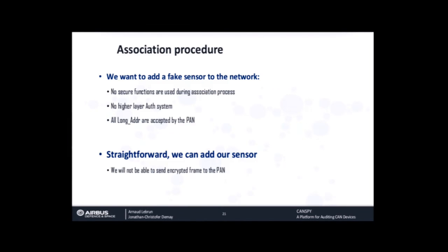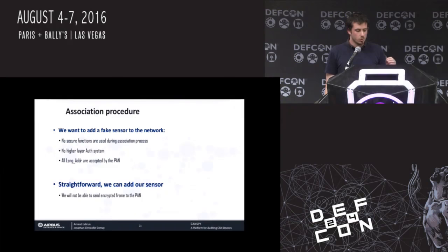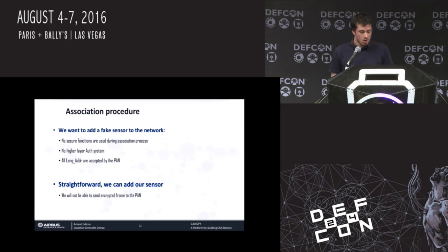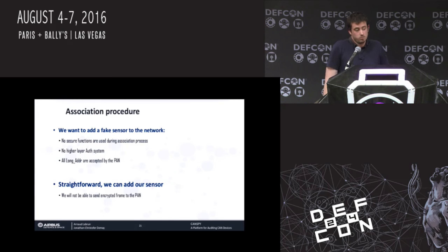The next step — and the simplest one — was to add our fake sensor to the network. Basically, there is no security function during the association process; we did not find any higher-layer authentication system, and there is no filter on the address. We can use any address we want, so it is basically straightforward. We are able to connect our sensor, but we are not able to send frames because we cannot encrypt them — we do not know the key.